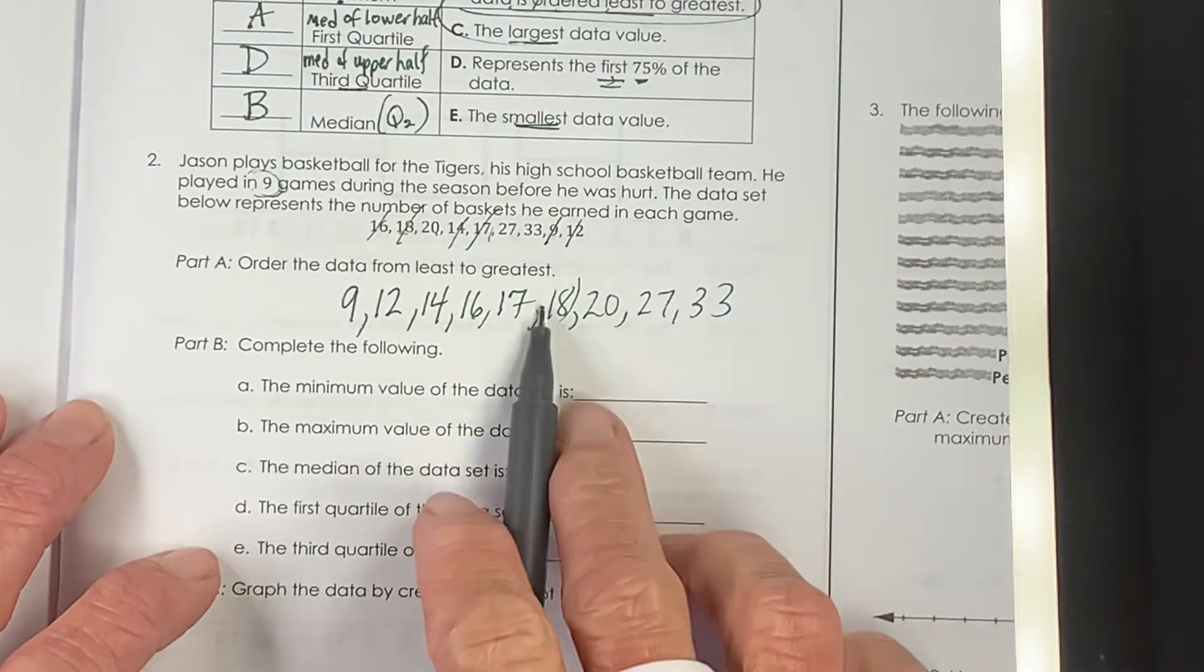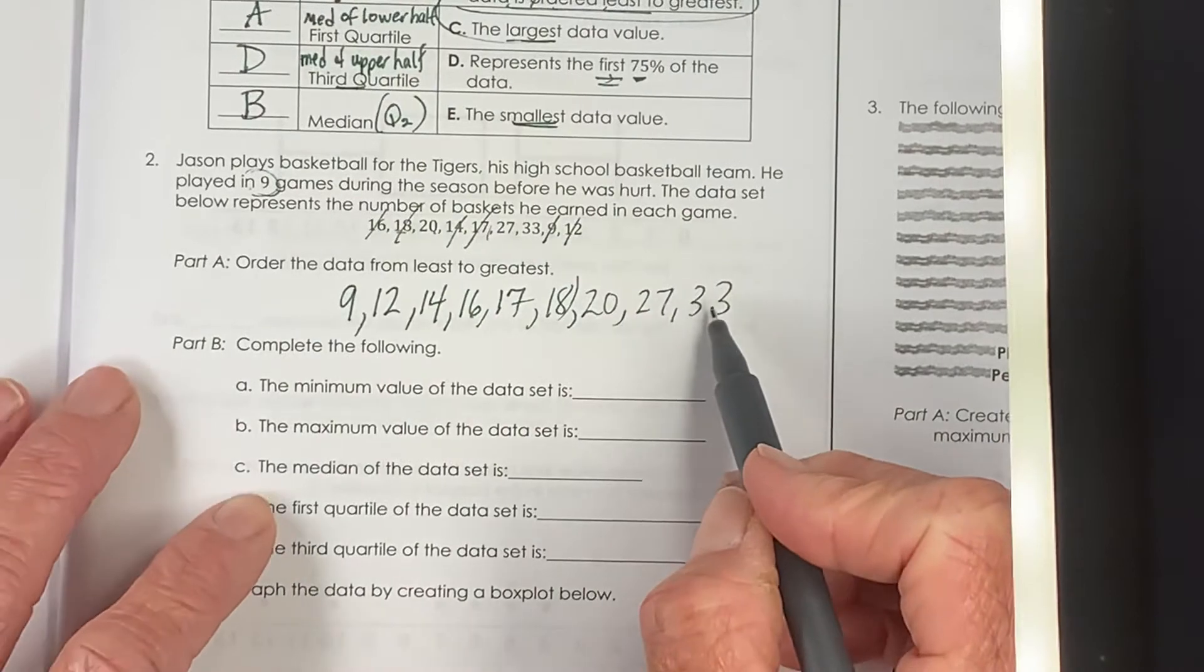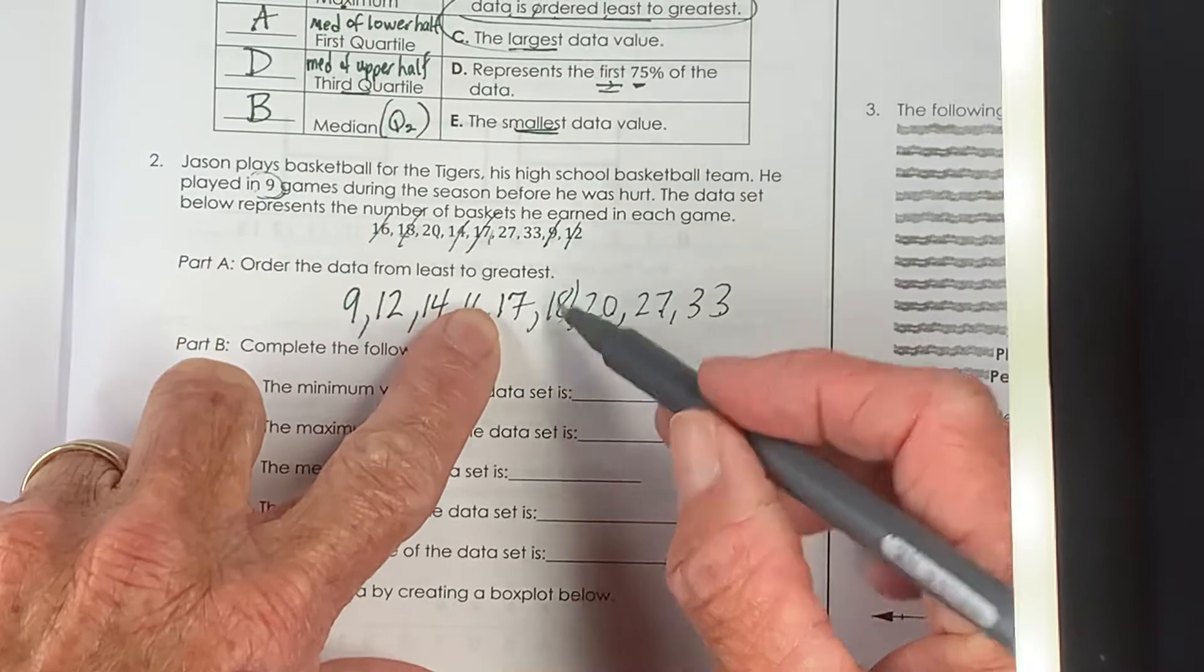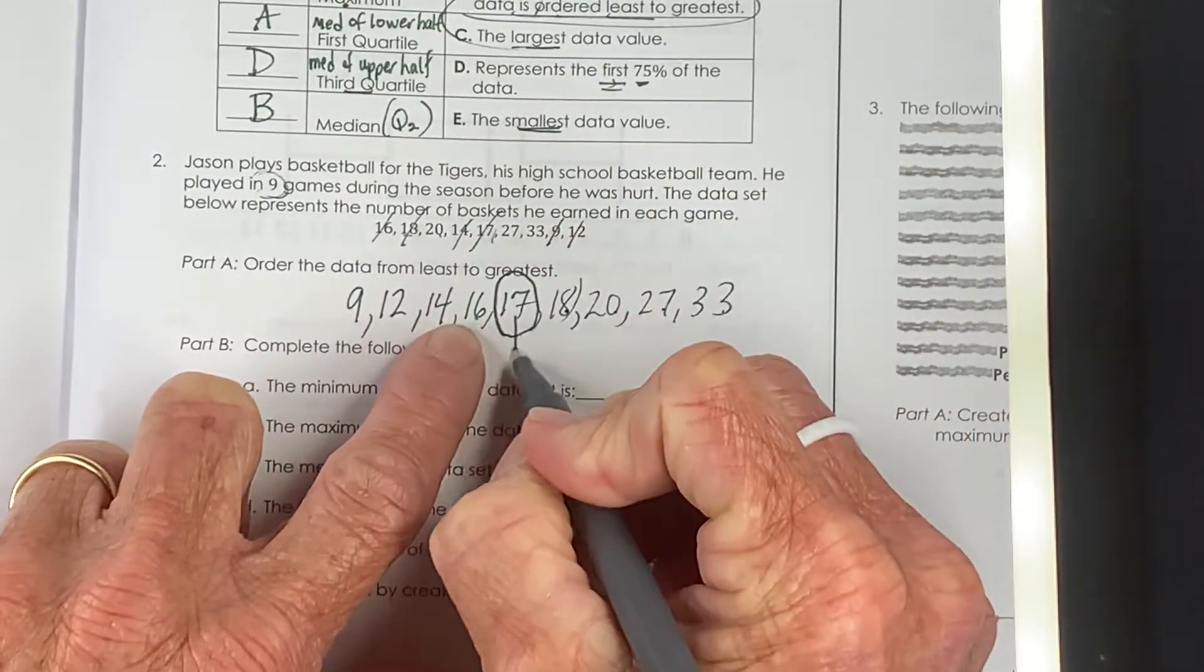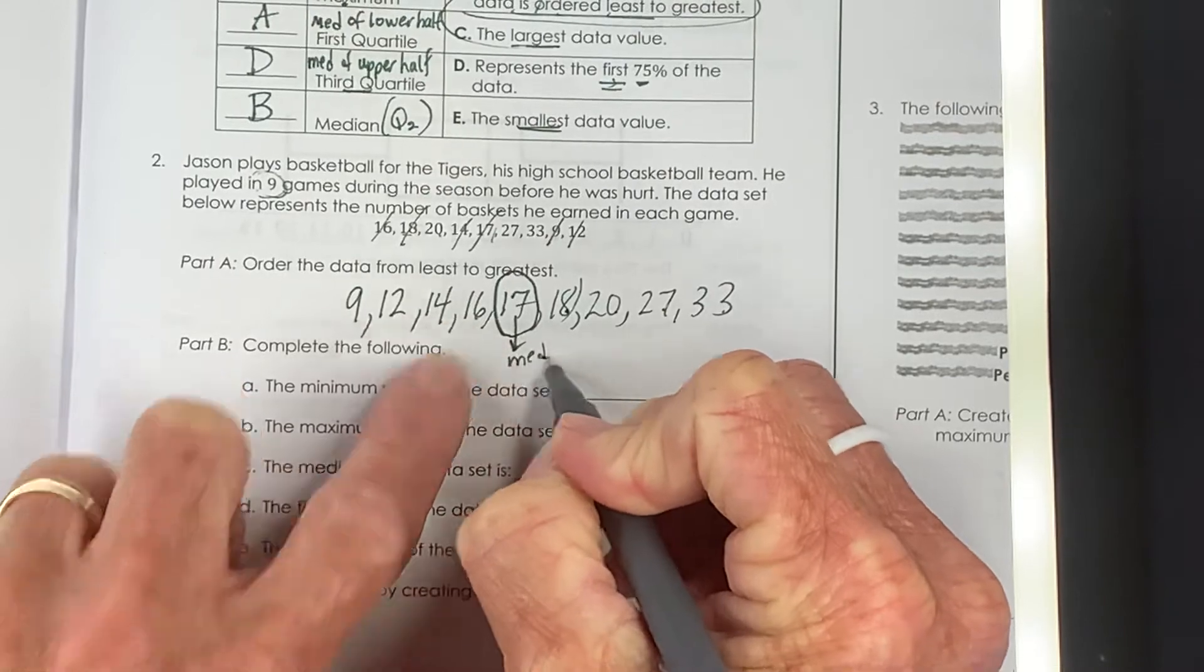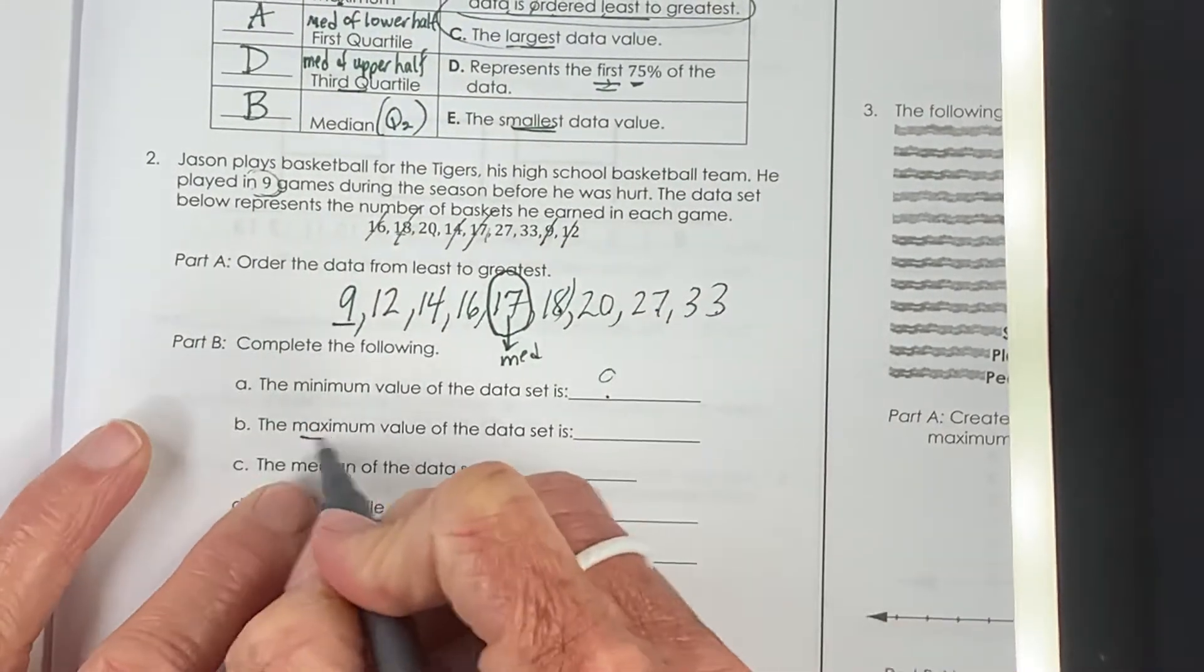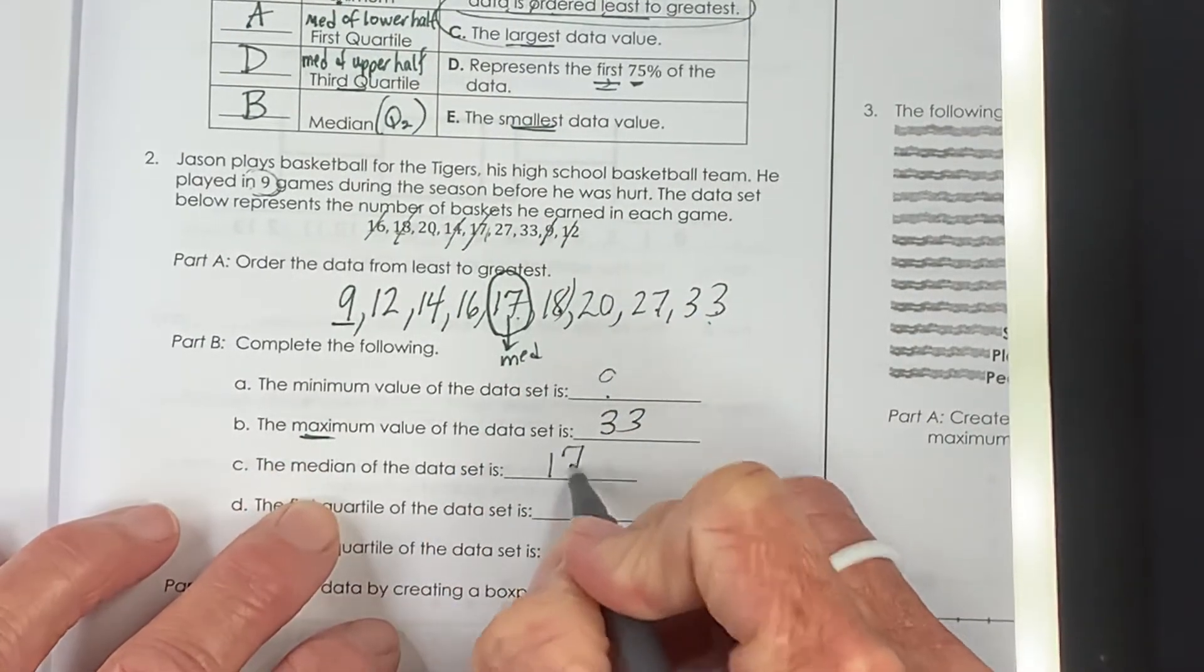There should be nine of them. Two, four, six, eight, nine. Sure enough. And since we have nine, we know we can count in one, two, three, four from each end. And this number here is in the middle all by itself. This is the median of our data. The minimum value in our data set was 9. The maximum was 33 and the median is actually 17.